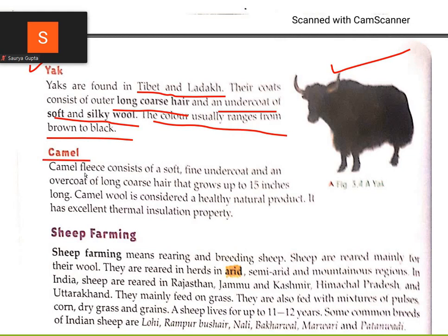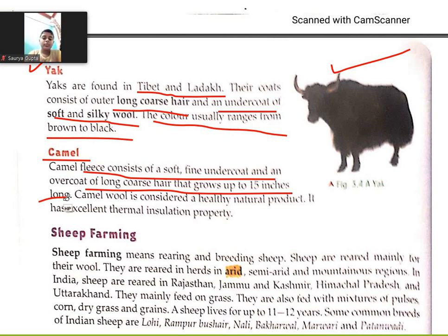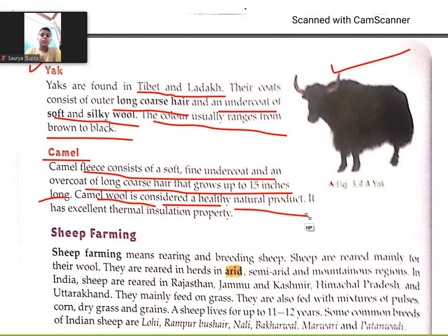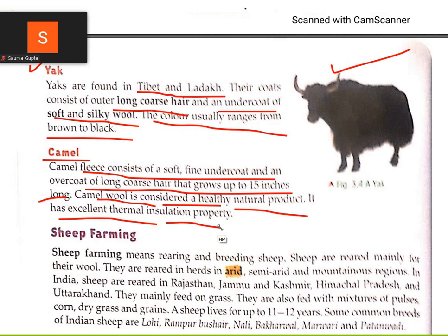Camel fleece consists of a soft fine undercoat and an overcoat of long coarse hair that grows up to 15 inches long. Camel wool is considered a healthy natural product. It has excellent thermal insulation properties.